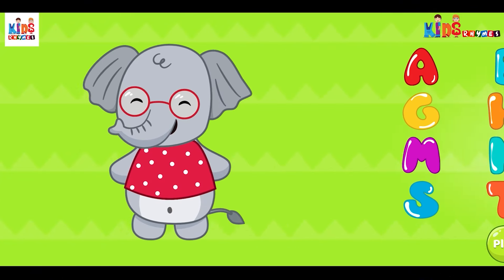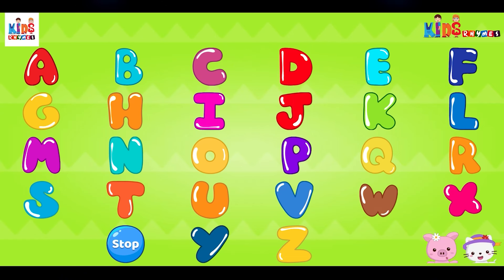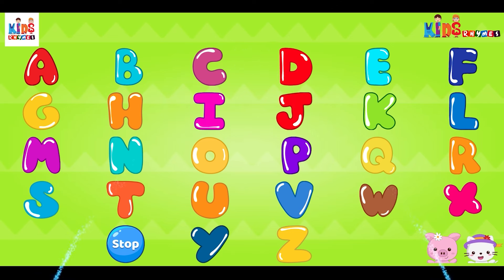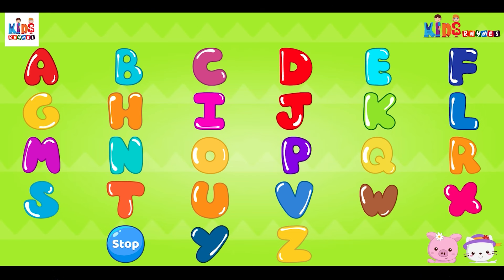Hi, I am Ellie. Let's tap these letters together: A, B, C, D, E, F, G, H, I, J, K, L, M, N, O, P, Q, R, S, T, U, V, W, X, Y, and Z. Now I know my ABCs, next time won't you sing with me?